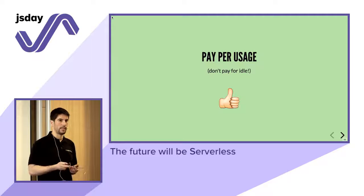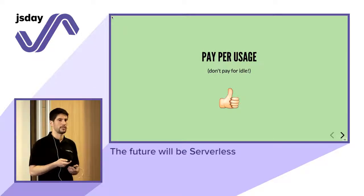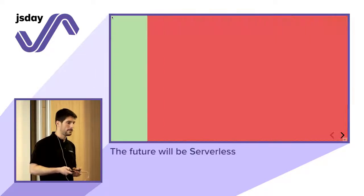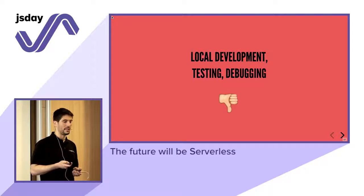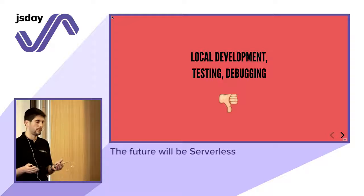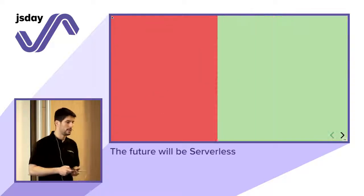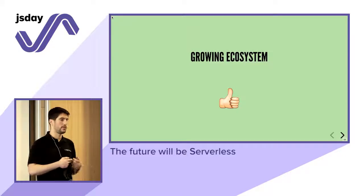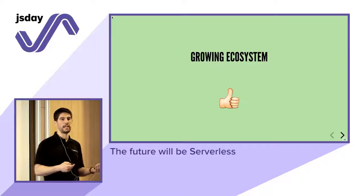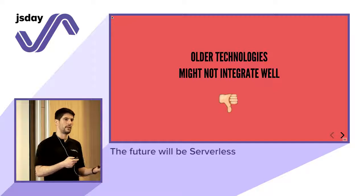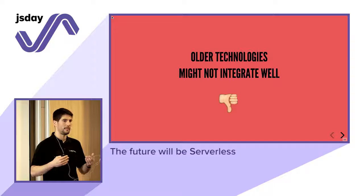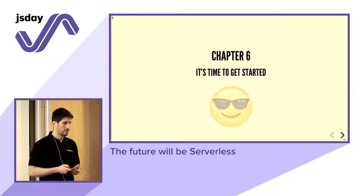Pay per usage — you don't pay for idle — is a big advantage. When I was working in the electricity company, serving around 20 customers with a decent amount of requests, the highest bill I saw was five dollars. So you can run a business with a very low budget. On the downside, local development, testing, and debugging is still kind of tricky. Many providers only think you should do your work online, which isn't always ideal. As a developer you'll struggle a bit, but there is a growing ecosystem of open source libraries and frameworks that will help.